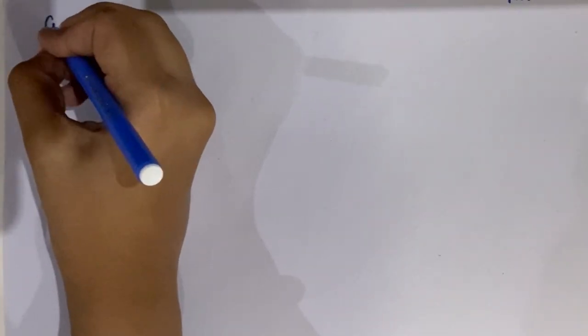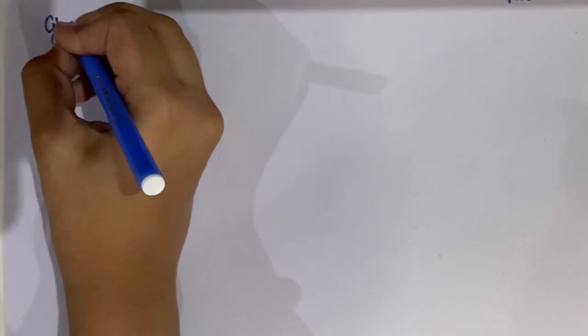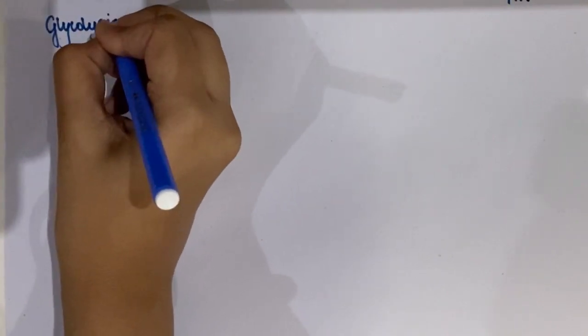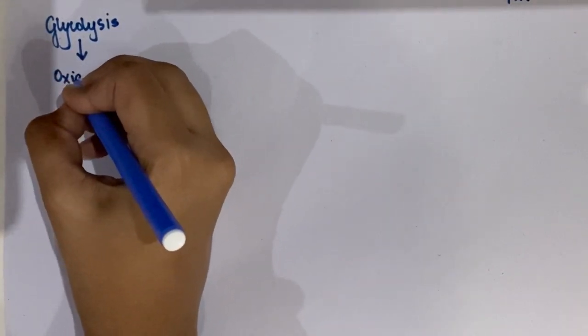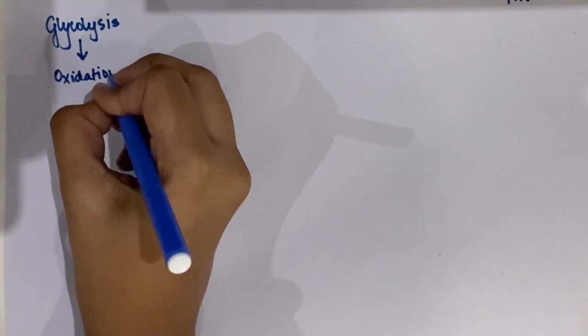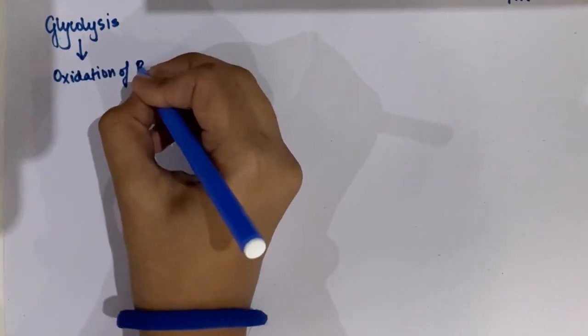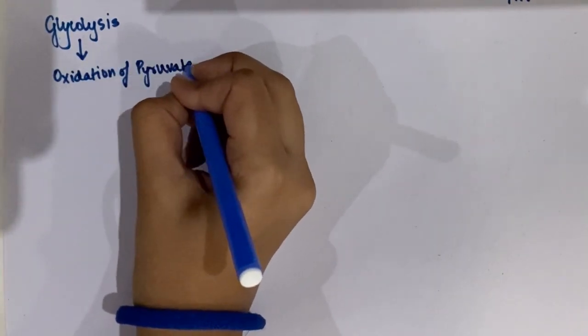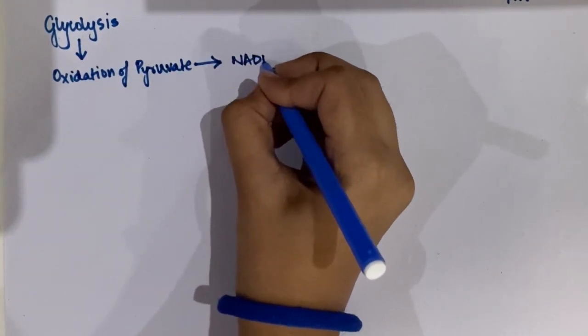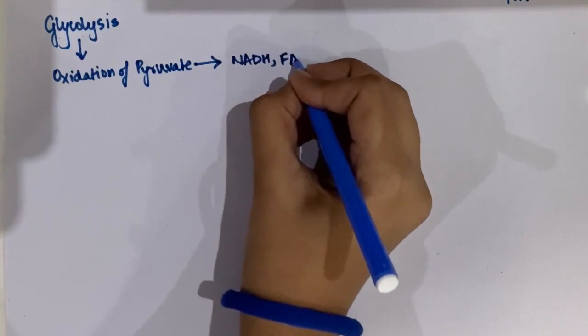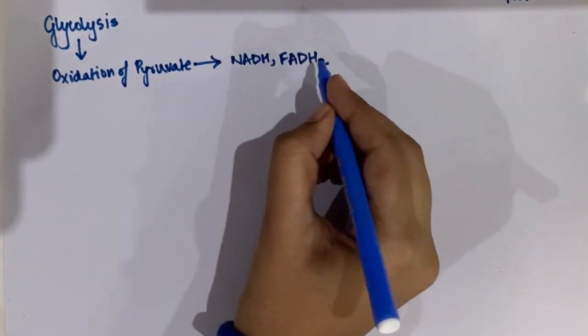Welcome back. In today's video we're going to cover an important aspect of respiration: the electron transport chain. We've finished glycolysis and we know that the products of glycolysis are two molecules of pyruvate, followed by the oxidation of pyruvate by successive steps in the Krebs cycle, in order to give us various energy equivalent products such as NADH and FADH2.